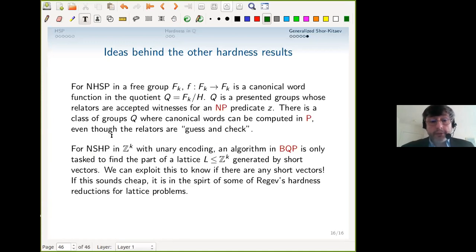Then finally, for the hidden subgroup problem in Z^k with unary encoding, it sounds like in a way it's a swindle, but in a way it's not. An algorithm in BQP is only tasked to find the part of a lattice which might be a periodicity generated by short vectors, because you can't even see long vectors. That's a natural way to set things up. But what this means is that, given a lattice, you can cook up a hiding function with that periodicity out in the large beyond where the algorithm can see. If the algorithm can work, then we can exploit it to know if there are any short vectors, and that lets us solve the short vector problem. If this sounds cheap, it's actually in the spirit of some of Regev's important hardness reductions for his lattice cryptography.